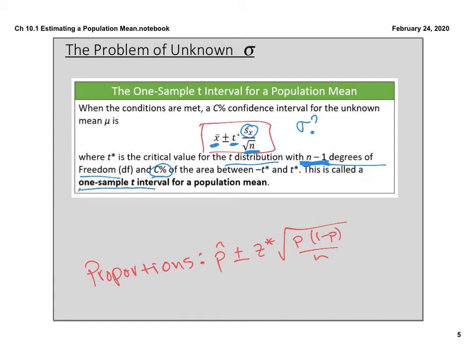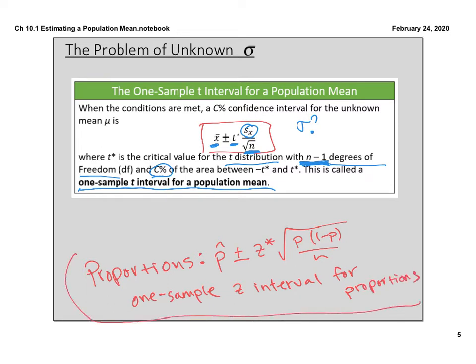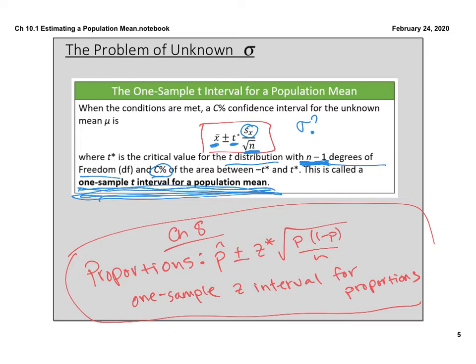This is called a one-sample t interval for means, whereas the one from chapter 8 was a one-sample z interval for proportions. The degrees of freedom component is kind of new to us, but all you do is take n minus 1. If your n is 30, your degrees of freedom is 29. If your n is 100, your degrees of freedom are 99. That's all you do — n minus 1.